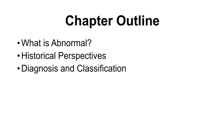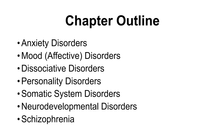Then we'll go into specific disorders. The categories we're going to focus on: we'll start with anxiety disorders, then mood or affective disorders, dissociative disorders, personality disorders, somatic symptom disorders — that's one I throw in just because it's neat, not because it's common or well understood. Then we'll get into neurodevelopmental disorders and schizophrenia. Schizophrenia gets its own category because it's the disorder we know the most about and have studied the longest.